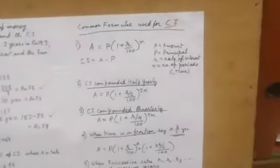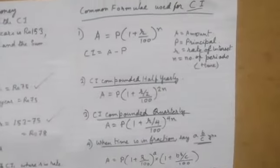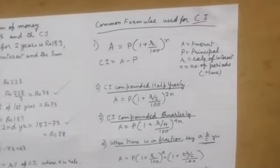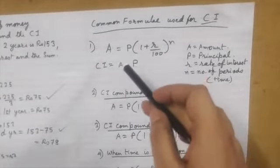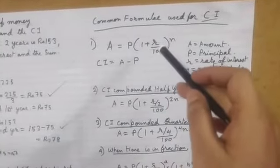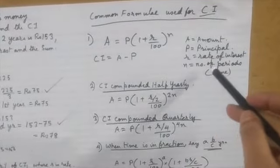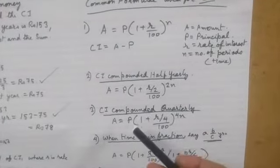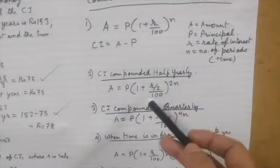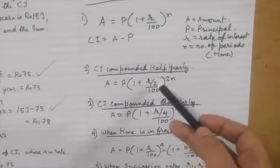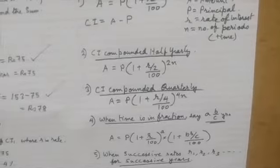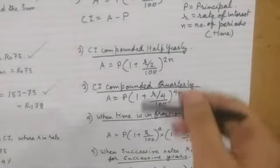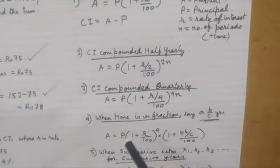Here are a few standard formulae of compound interest that we use while doing most of our sums. A is equal to P into one plus r by 100 whole to the power n, where n is the number of periods, same as time. For compound interest half-yearly, it is r divided by 2 over 100, and the power is 2n. For quarterly, it is r divided by 4 over 100, and the power is 4n.